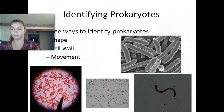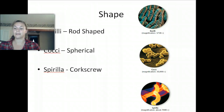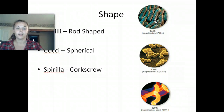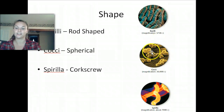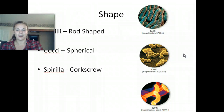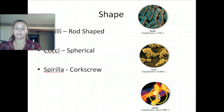Looking at the shape of prokaryotes, there are three different shapes: bacilli, cocci, and spirilla. Bacilli means rod-shaped — the bacteria are a cylinder shape, and whenever you see bacteria drawn in the book it's usually a bacillus. Cocci means spherical — they're kind of round. The last kind is spirilla — a bacteria that's corkscrew-shaped. When we look at movement, we'll see how those bacteria move. You can see they're shaped like a spiral or a corkscrew.